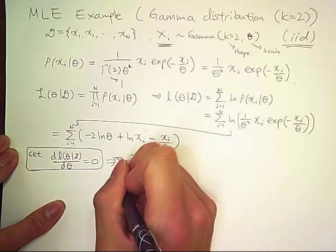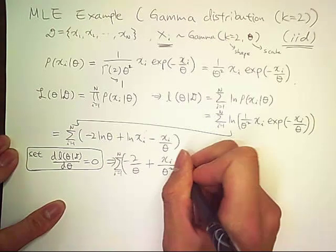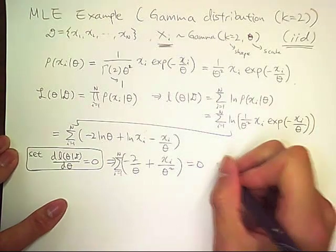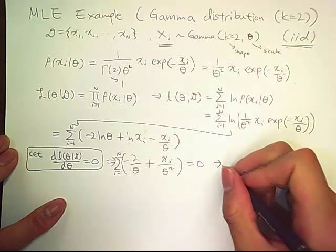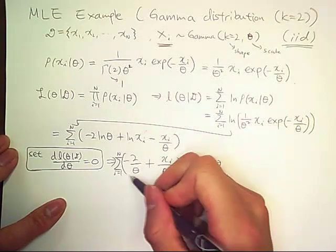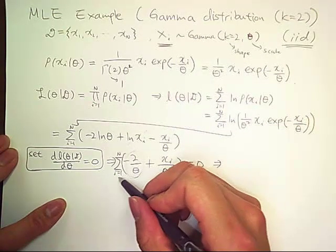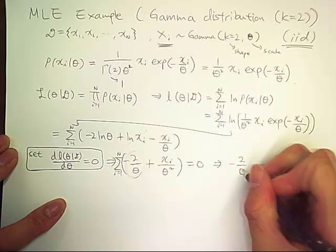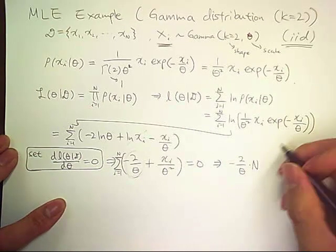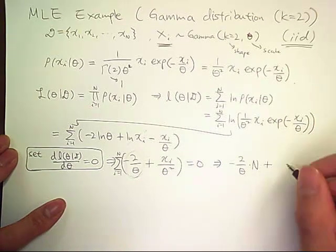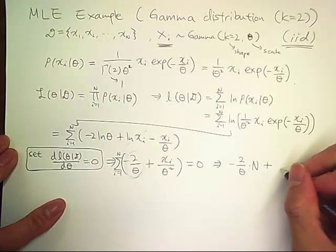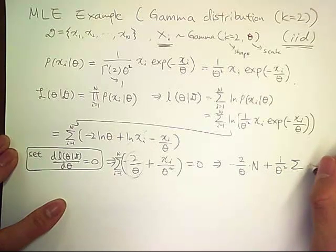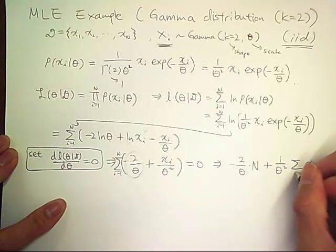So this is sum over i from 1 to n equals 0. Now this first term is not independent of i, so this becomes negative 2 times n plus 1 over theta squared times the sum of x sub i.